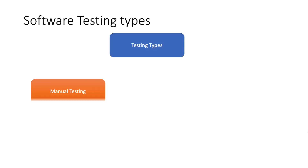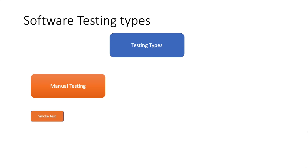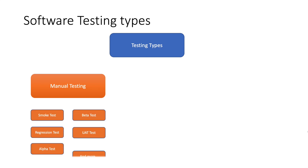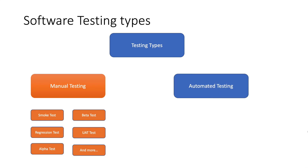Software testing is very important, and types of software testing are very important. As I mentioned, alpha testing and beta testing fall into two categories: manual software testing and automated software testing. In manual software testing, you will have black box testing, glass box testing, alpha testing, and beta testing.